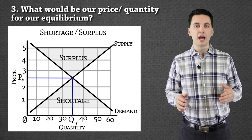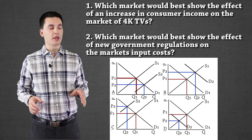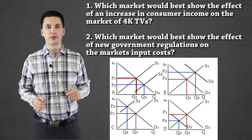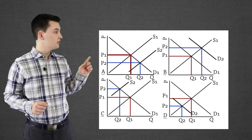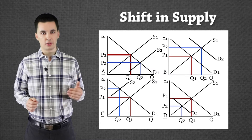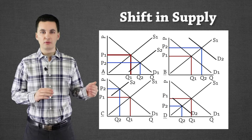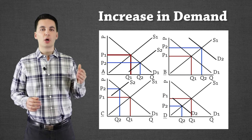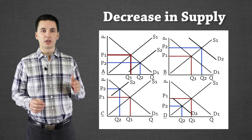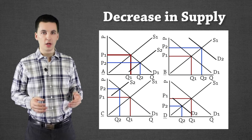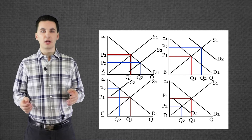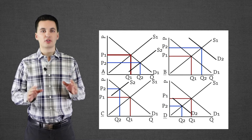Let's look at practice problems with market shifters. We have different markets on the screen — A, B, C, and D. For market A, we see supply shifting further out, which means supply is increasing. For market B, demand is increasing. For market C, supply is moving closer to zero — it's decreasing. And for D, demand is decreasing. For any quiz or test, I recommend marking supply going up or down right away so you won't get confused.